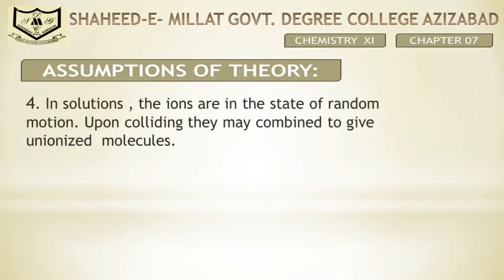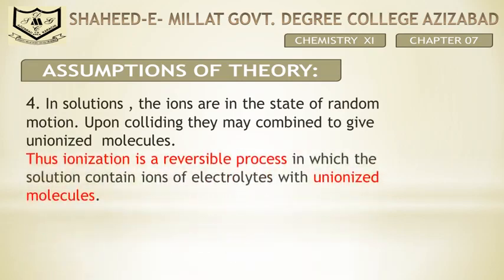In the solution, ions are in a state of random motion. Upon collision, they may combine to give unionized molecules. Kisi bhi solution mein maujood ions hamesha randomly move karte hain, aur is random movement ke dauran yeh aapas mein collide karte hain, jiske natije mein ions dobarah apne unionized molecule mein tabdil ho jate hain. Thus, ionization is a reversible process, in which the solution contains ions of the electrolyte along with unionized molecules.